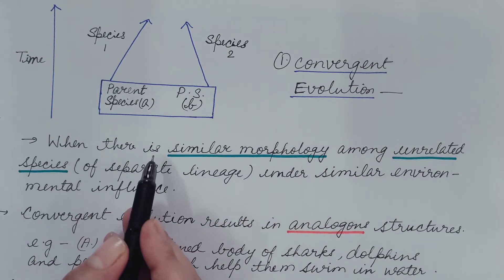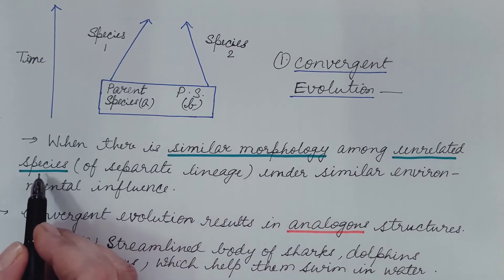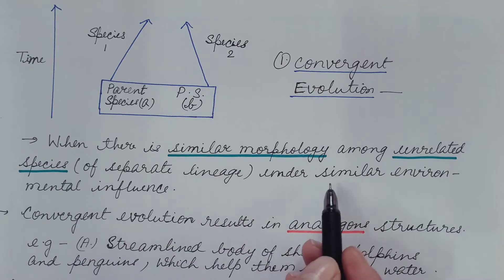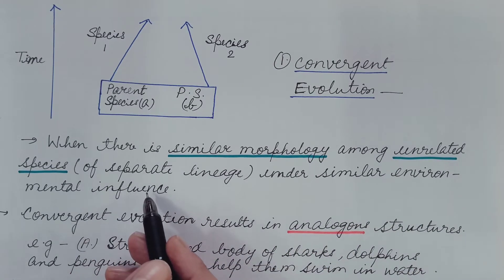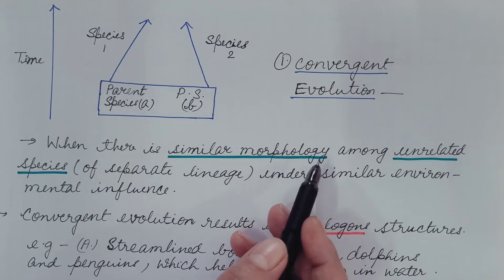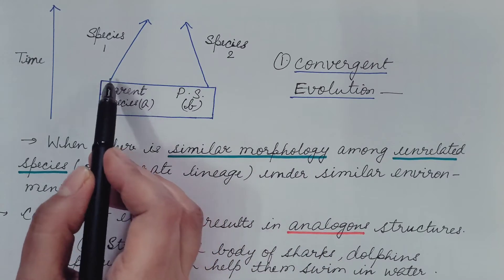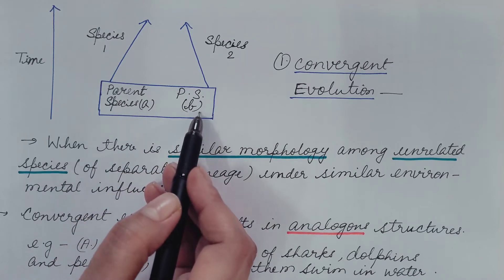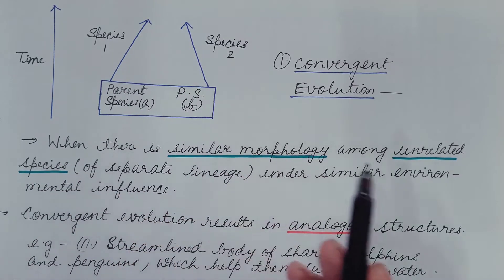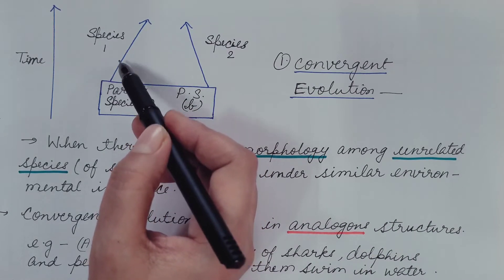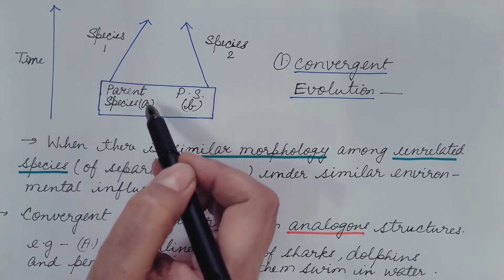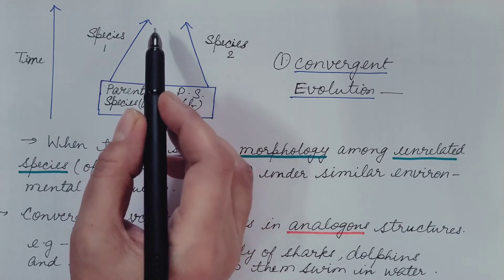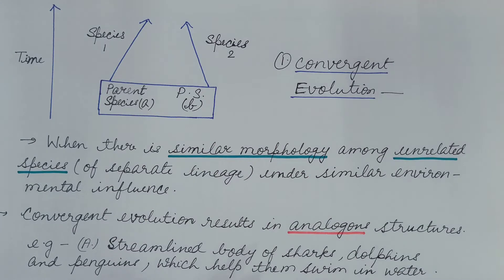First is convergent evolution — when there is similar morphology among unrelated species of separate lineage under similar environmental influence. When species are under the influence of the same environmental factors, they show similar morphology. Parent species A and parent species B are of different lineages. When these are under the influence of similar environmental factors, they undergo evolution: parent A evolves into species 1 and parent B evolves into species 2, and these show similar morphology. This is known as convergent evolution.